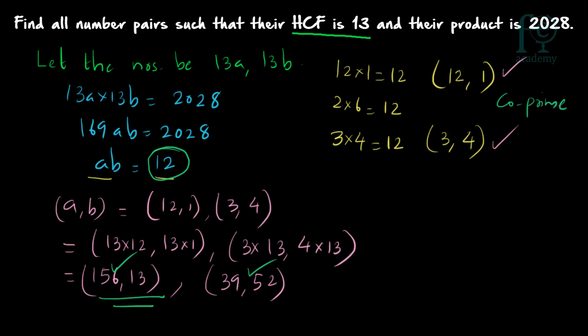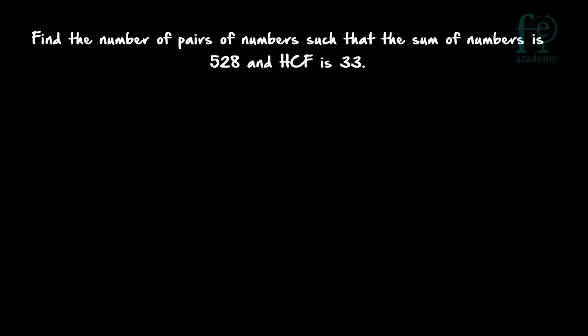It is very important that you understand the concepts: what is co-prime, what is HCF, what is LCM, and that HCF × LCM = product of the numbers. Question 3: find the number of pairs of numbers such that the sum of the numbers is 528 and HCF is 33. How many pairs of numbers will there be whose sum is 528 and highest common factor is 33?